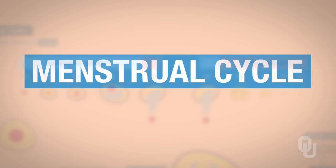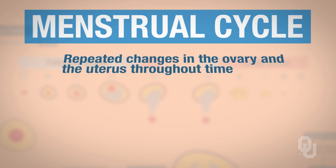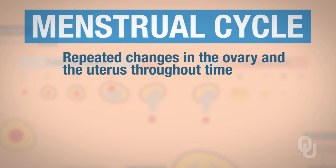To begin with, let's just look at an overview of the menstrual cycle. This is where you have repeated changes in the ovary and the uterus throughout time.